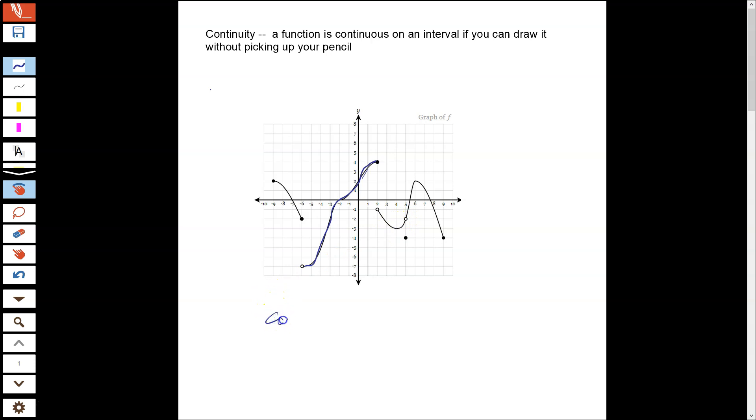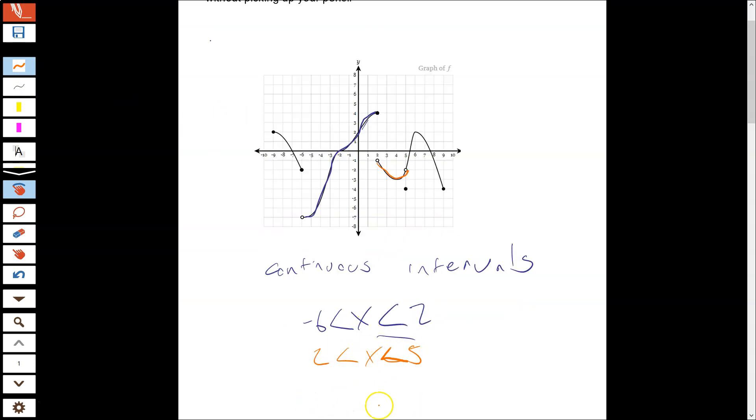But it's not continuous at x equals 5 because it has that hole in it. So we'd say a continuous interval. We'll list a couple continuous intervals, and I'm just going to use inequality notation. So it would be x between negative 6 and 2, 2 included. Here's another one. So from 2 to 5.